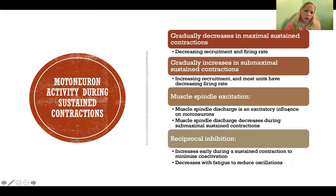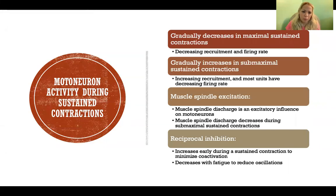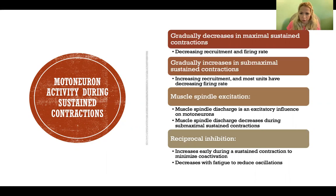Motor neuron activity during sustained contractions gradually decreases in maximal sustained contractions. So in maximal sustained contractions, where we're contracting to the greatest extent and producing the most force possible, we have a gradual decrease in motor neuron activity. We have decreased recruitment of motor units — gradually fewer and fewer motor units are activated — and the firing rate of the activated motor neurons also decreases.